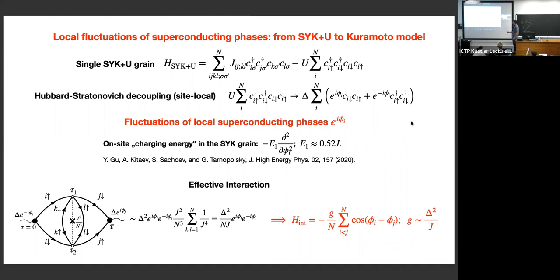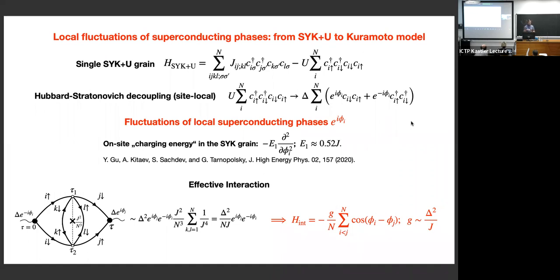Now let me consider phase fluctuations in detail, starting with a single grain and disregarding tunneling. Technically, one uses field theory and makes a Hubbard-Stratonovich decoupling. Importantly, because the U term is site-local, one introduces a local decoupling field for each site. I make the assumption that this local field has a constant amplitude delta — which I can put real — but also a phase factor e^{i phi_i}, so each site has a superconducting phase that can fluctuate and differ from one site to another.